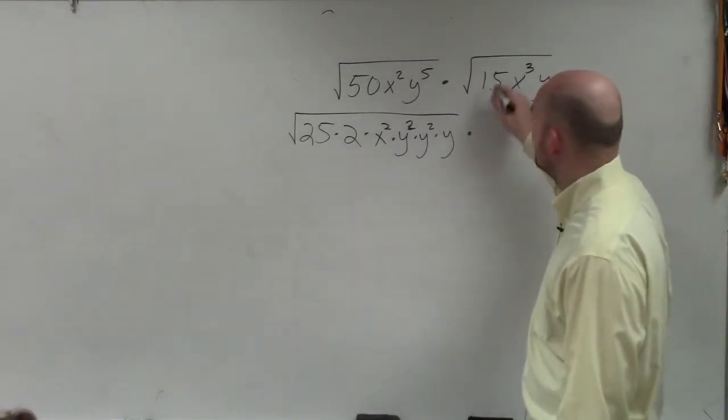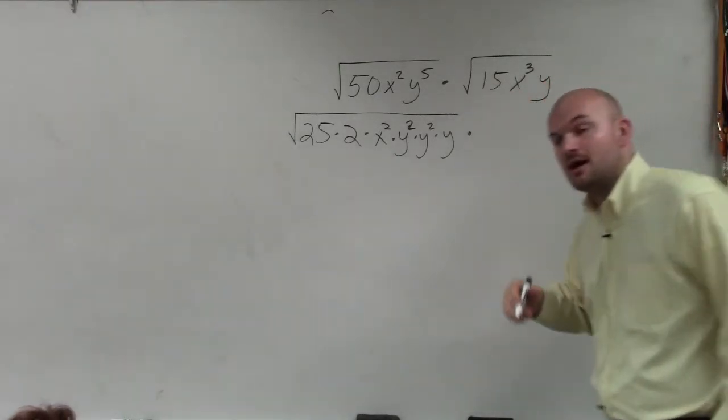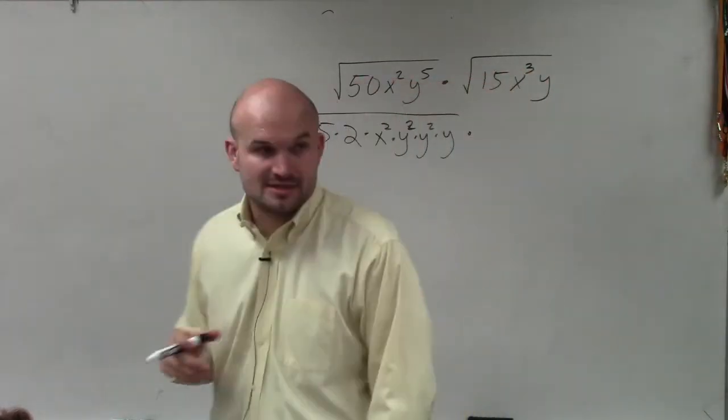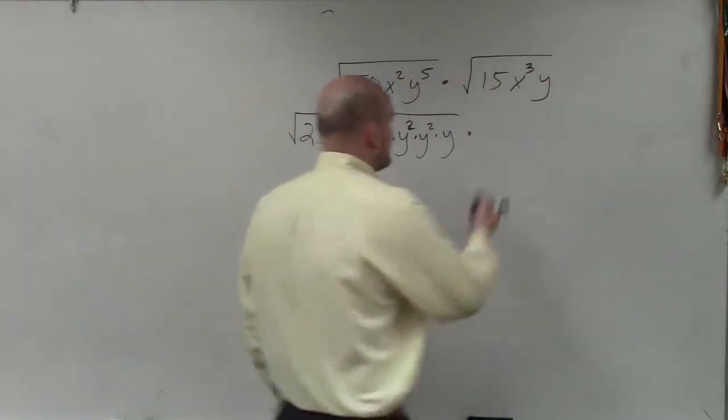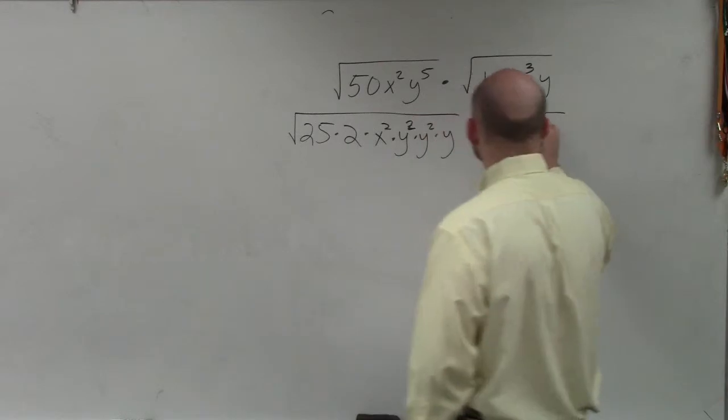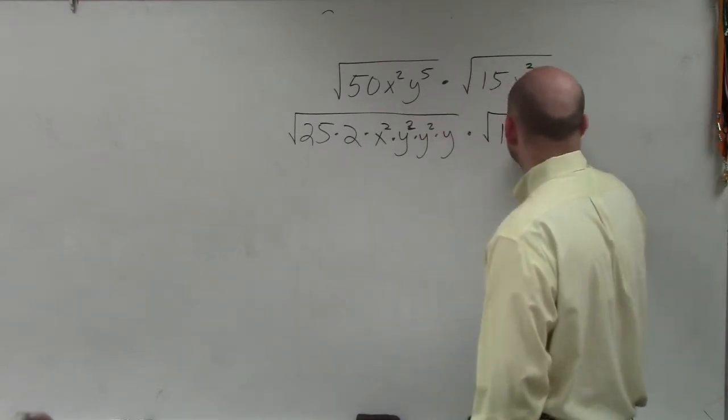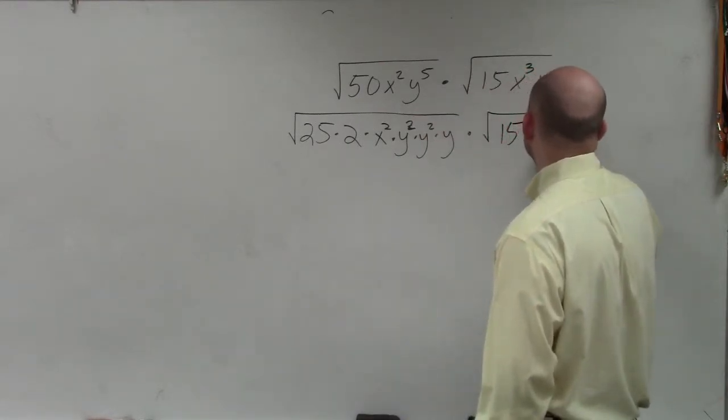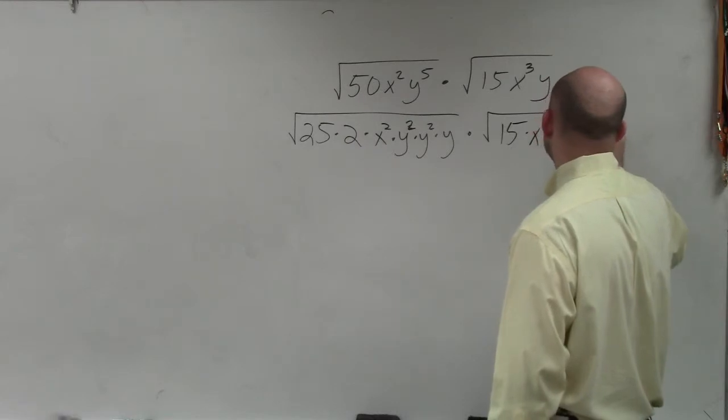And then I'd do the same thing for 15. I can't take the square root of any number of 15 or any of its factors. The factors are 3 and 5. So therefore, I'm going to leave that. x cubed, though, I'll write as x squared times x, and then times y.